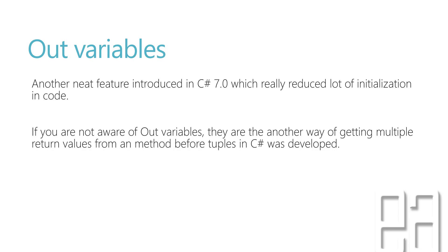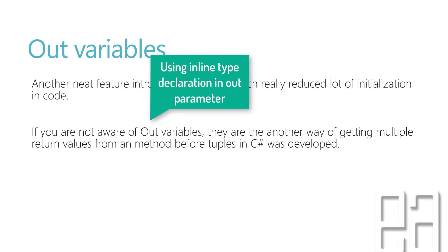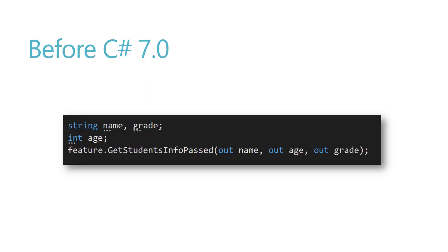In our previous video we talked about tuples, deconstruction of tuples, and how we can return multiple values from tuples. Tuples were introduced in C# 7.0 with a lot of enhancements, but the out variable was something very prominently used in C# to return multiple values from a method — that's why it's called an out variable.